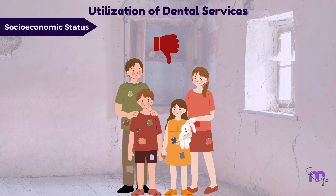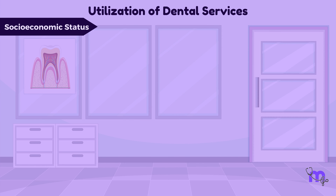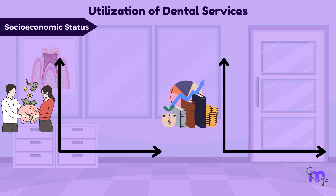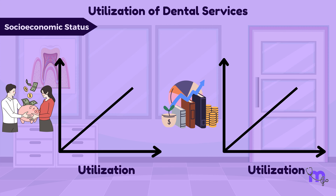No matter what anyone says, family income and literacy rate will, in most cases, be directly proportional to the utilization of services.